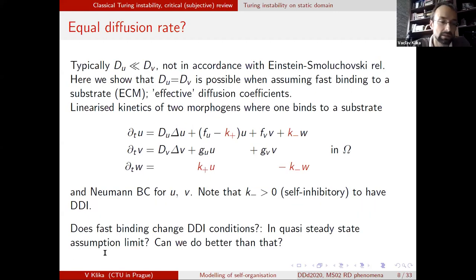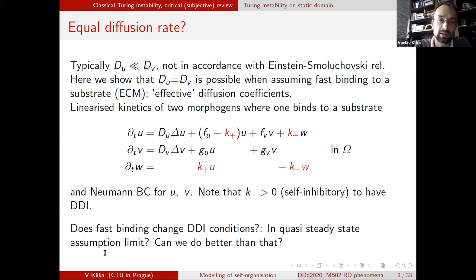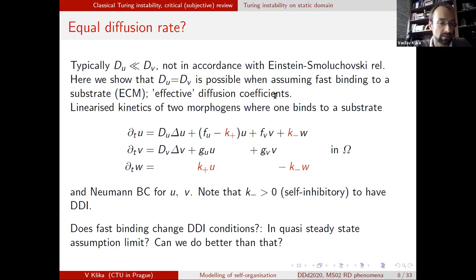There are some well-known issues with Turing instability. One of the main difficulties is that it requires a quite large ratio of diffusion coefficients. That's surprising given that certain relations should be satisfied between diffusion coefficients and the size of the molecules or morphogens that are moving around.